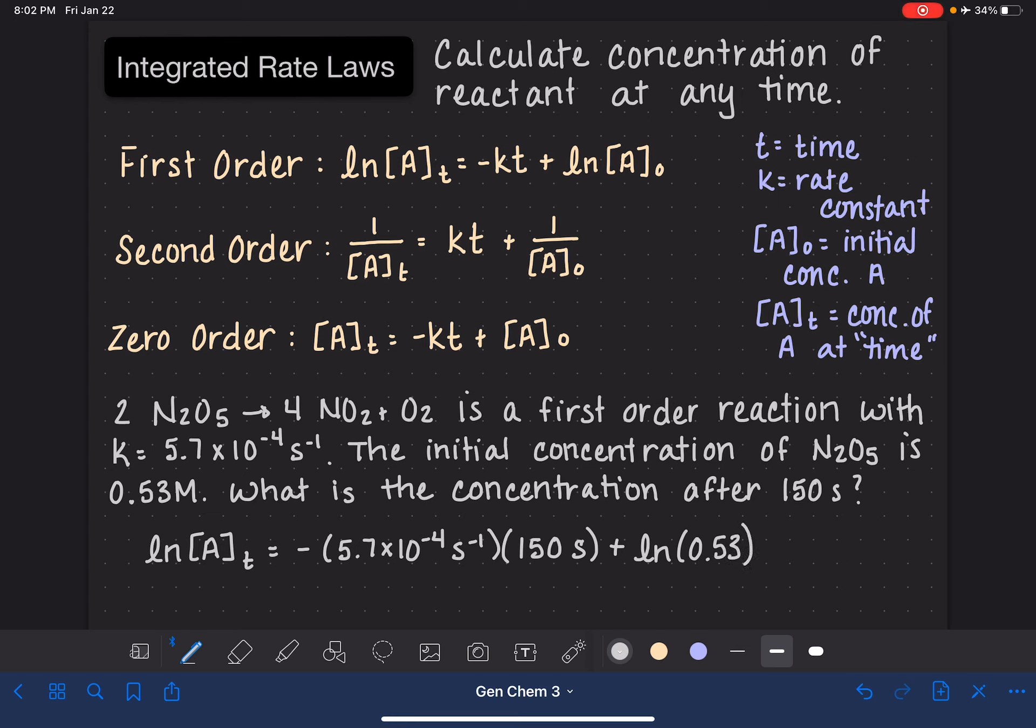So all that we have to do here is just work the math out. I'm going to start by solving the math on the right-hand side of the equation first. I'm going to begin with the natural log calculation, doing the natural log of 0.53, and then I am going to add that to the negative 5.7 times 10 to the minus 4 times 150. And this gives me an answer of negative 0.720.